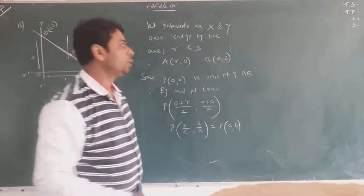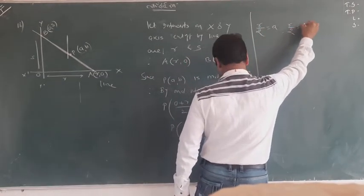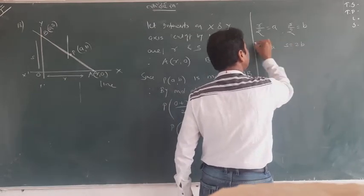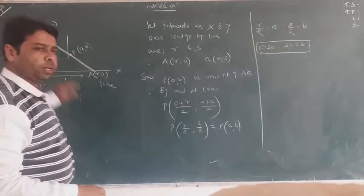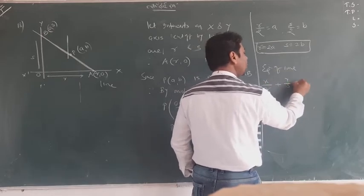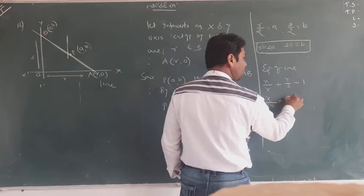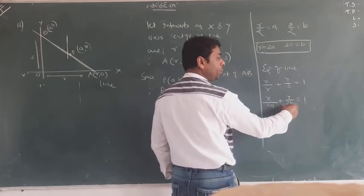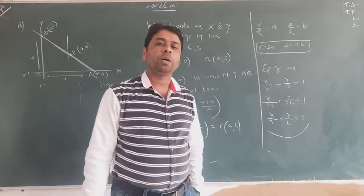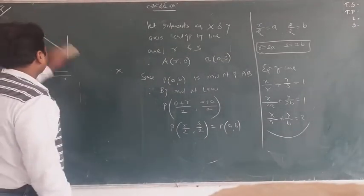On comparing, r/2 = a and s/2 = b. So r = 2a and s = 2b. Now the equation of the line in intercept form is x/r + y/s = 1. Substituting r = 2a and s = 2b: x/(2a) + y/(2b) = 1, and 2 is a common factor which transfers to the other side, giving x/a + y/b = 2, which is the required equation.